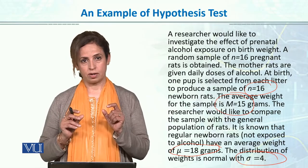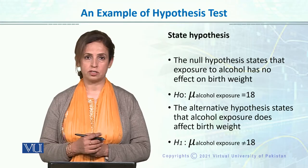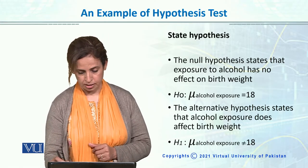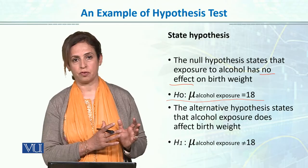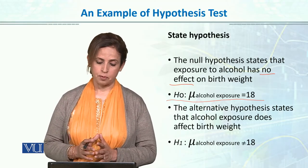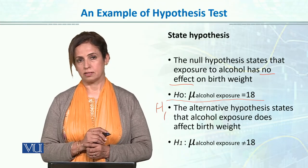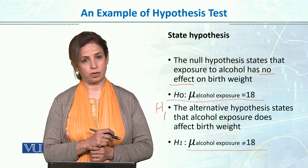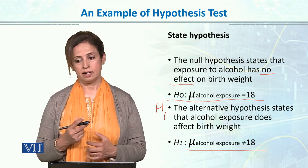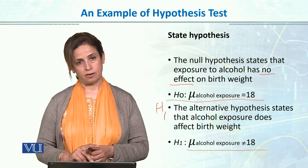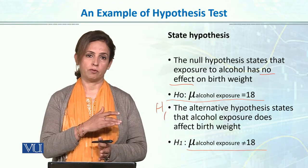What was the first step? In testing hypothesis, we state the hypothesis — both null and alternative. The null hypothesis states that exposure to alcohol has no effect on birth weight. Statistically: mu is equal to 18, meaning the average weight of newborn rats is the same. The research hypothesis H1 states that alcohol exposure does have an effect on birth weight, written statistically as mu is not equal to 18. You can make it directional since the sample mean of 15 is less than 18, but it is better to keep it non-directional.